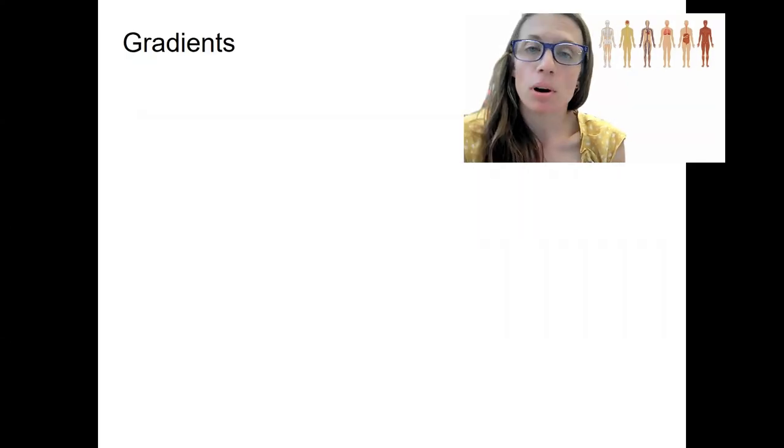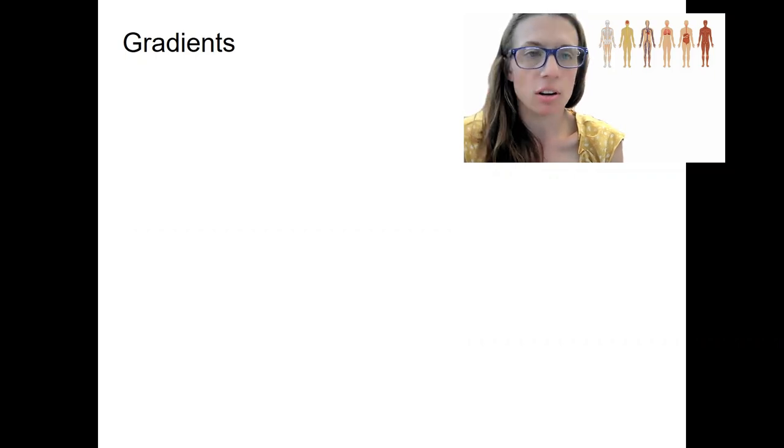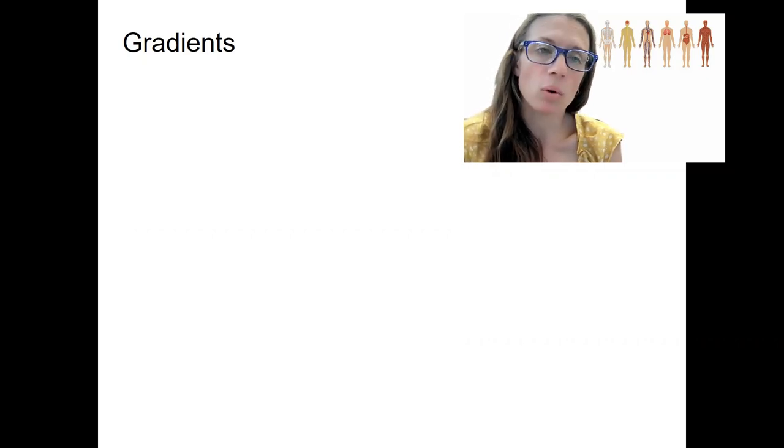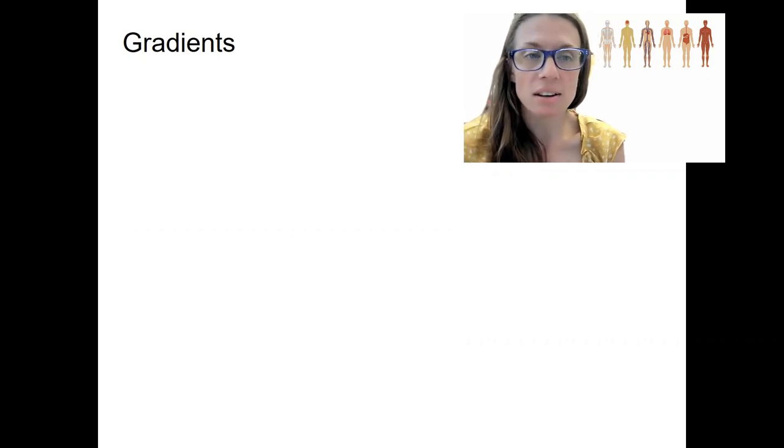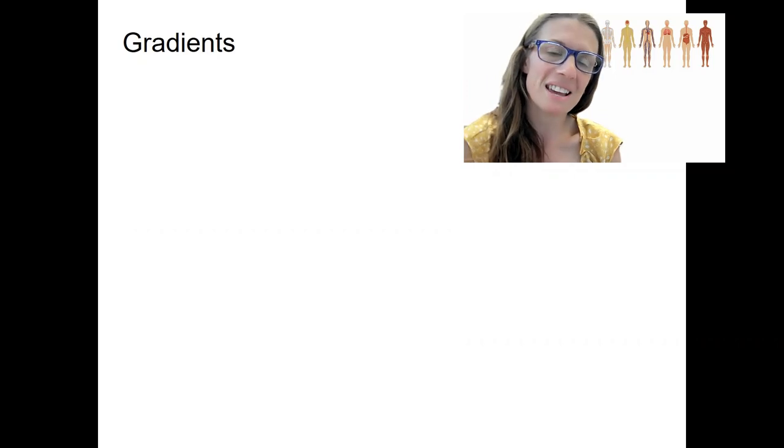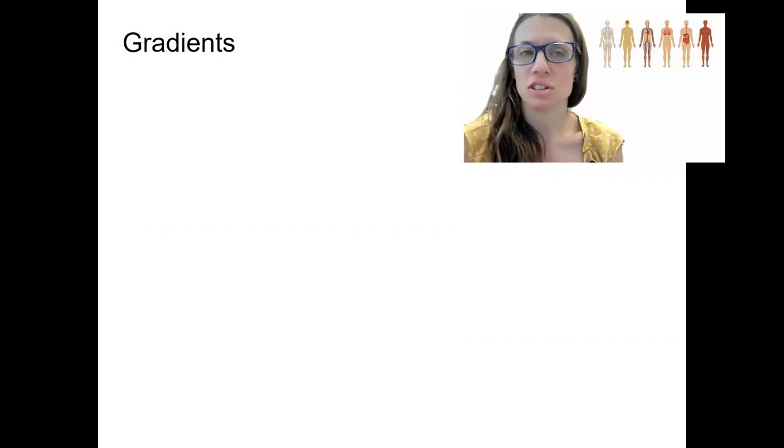Because of the different compartments we have, the organization of our body, we have the ability to have differences in either different places within our body or inside versus outside. These differences are called gradients, so a gradient is either a difference in one place in something versus another place.